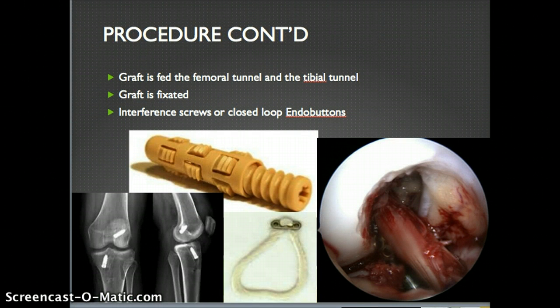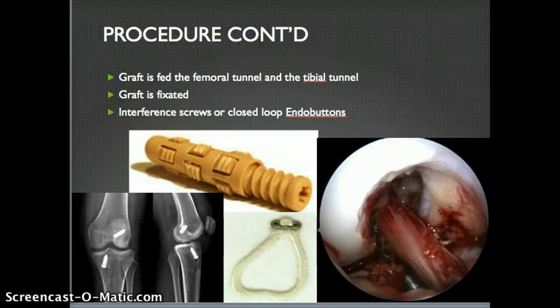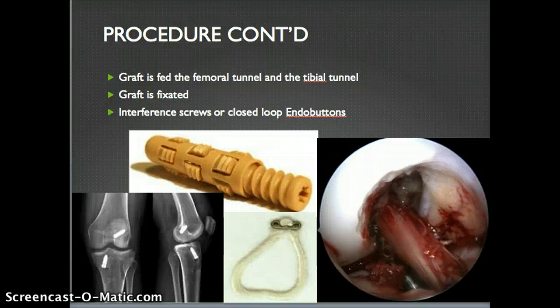Sutures are used to pull the graft through the tunnel, which is the next step. The graft is then fed through the femoral tunnel and the tibial tunnel and fixated using either screws, bolts, or buttons. Interference screws are the gold standard — they create compression between the soft tissue and the bone tunnel wall to generate friction, holding the graft in place and allowing proper healing. The knee is then flexed and extended to confirm no impingement, and a Lachman's and pivot test is performed to confirm stability before the knee is closed.